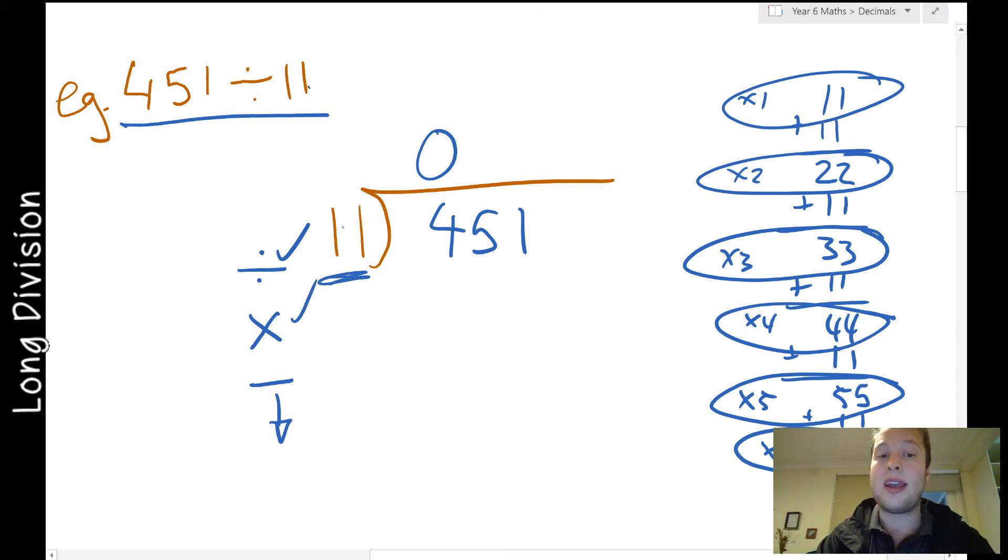Now I do my times step. 11 times the number I just worked out which was 0, so 11 times 0 is 0. Now I'm doing my subtraction step. I put in my little line here to say I'm going to now subtract it. 4 take away 0 is 4. Last step is bring the arrow down. This number that's next door, I've just finished my 4, I'm now going to bring it down. So I've now got 45 instead of 4.